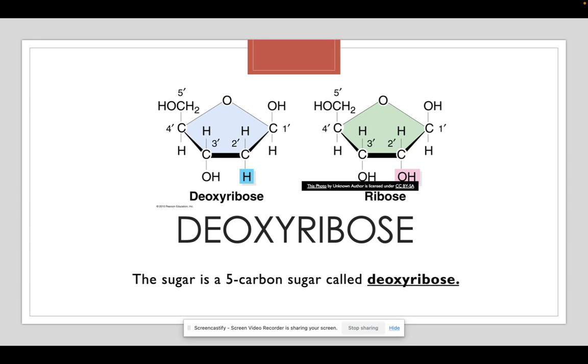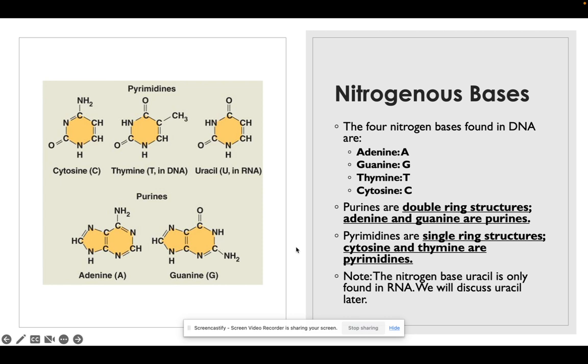Deoxyribose is a five-carbon sugar. There's also one called ribose, but deoxyribose is the blue on the left-hand side. Ribose has an OH. So nitrogen bases: we have four nitrogen bases—adenine, guanine, thymine, and cytosine. These are all found in DNA, also known by the first letter A, G, T, or C. Purines are those two on the bottom of the left-hand photo. They're double-ring structures: adenine and guanine are purines. Pyrimidines, which are the top row, are single-ring structures. Cytosine and thymine are pyrimidines. You might notice there's another pyrimidine up there called uracil, but the nitrogen base uracil is only found in RNA and we'll discuss uracil later this week.